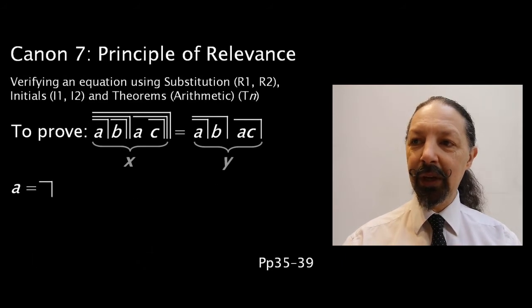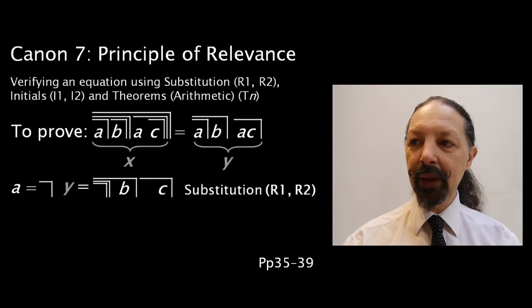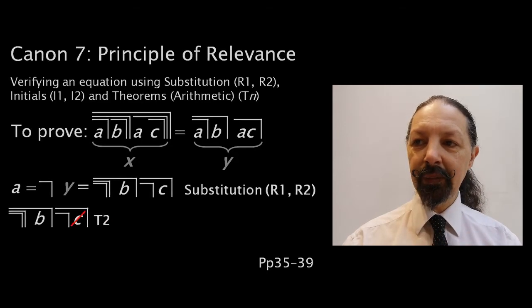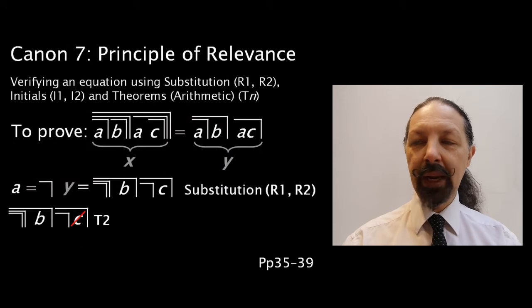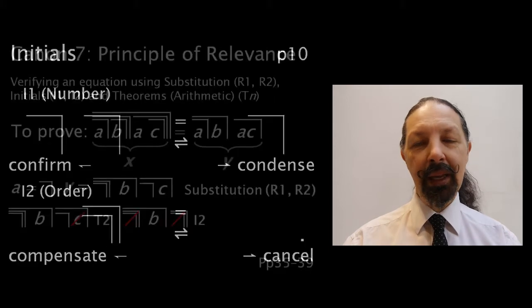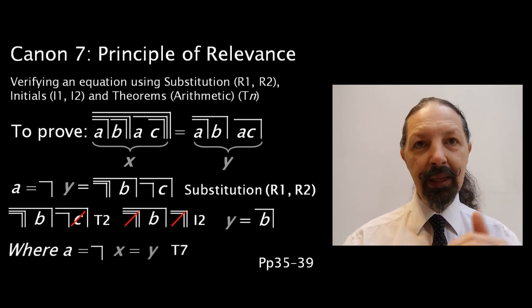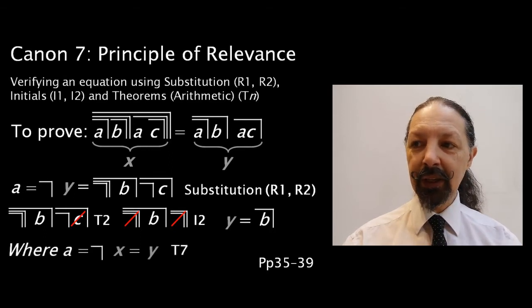Let's substitute a mark for A in expression Y. In this state, we take away anything next to an empty cross by T2. We cancel out the pair of nested marks by I2, and Y equals B cross. So where A is equivalent to a marked state, X equals Y by T7.